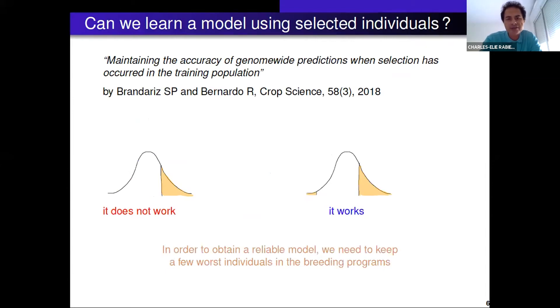The question is how can we learn a model with selected individuals? There's this very interesting study from Brandaris and Bernardo on maize. They studied many models, in particular ridge regression which is L2 penalized regression. What they show is that when they try to learn a model using only the best individuals, the picture on the left, it doesn't work - the predictions are not reliable. As soon as they include a few worst individuals, the picture on the right, the predictions become reliable. They conclude that in order to perform genomic selection we need to keep a few worst individuals in the breeding programs, but the problem is if you keep the worst individuals in the program it will be very costly.